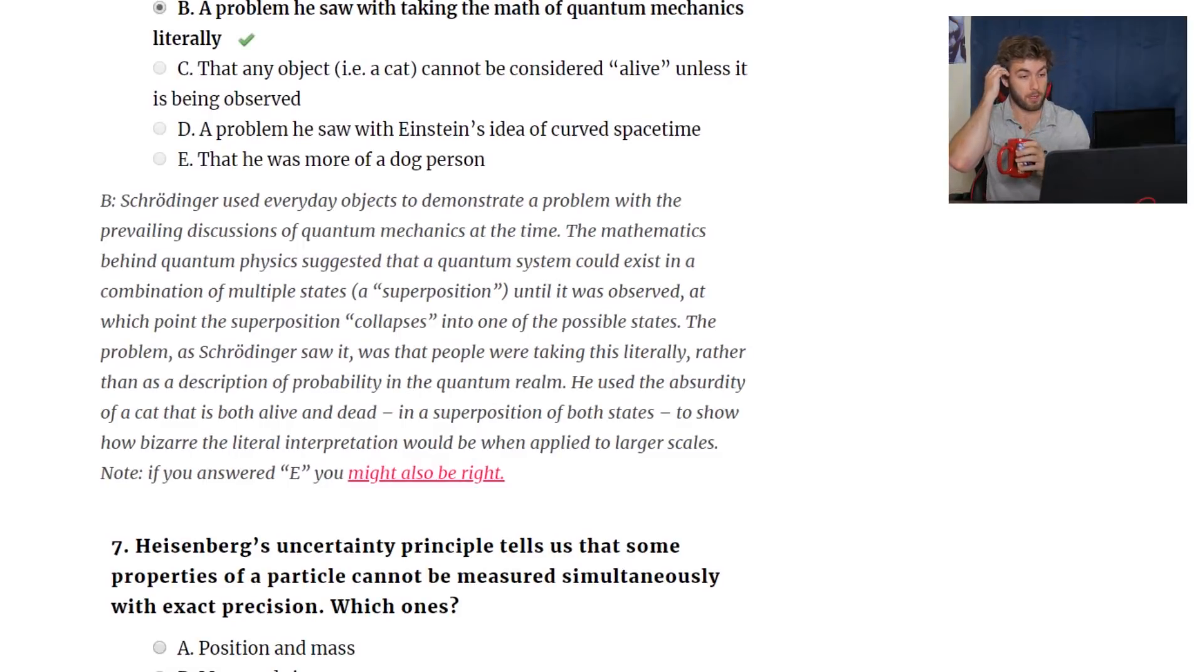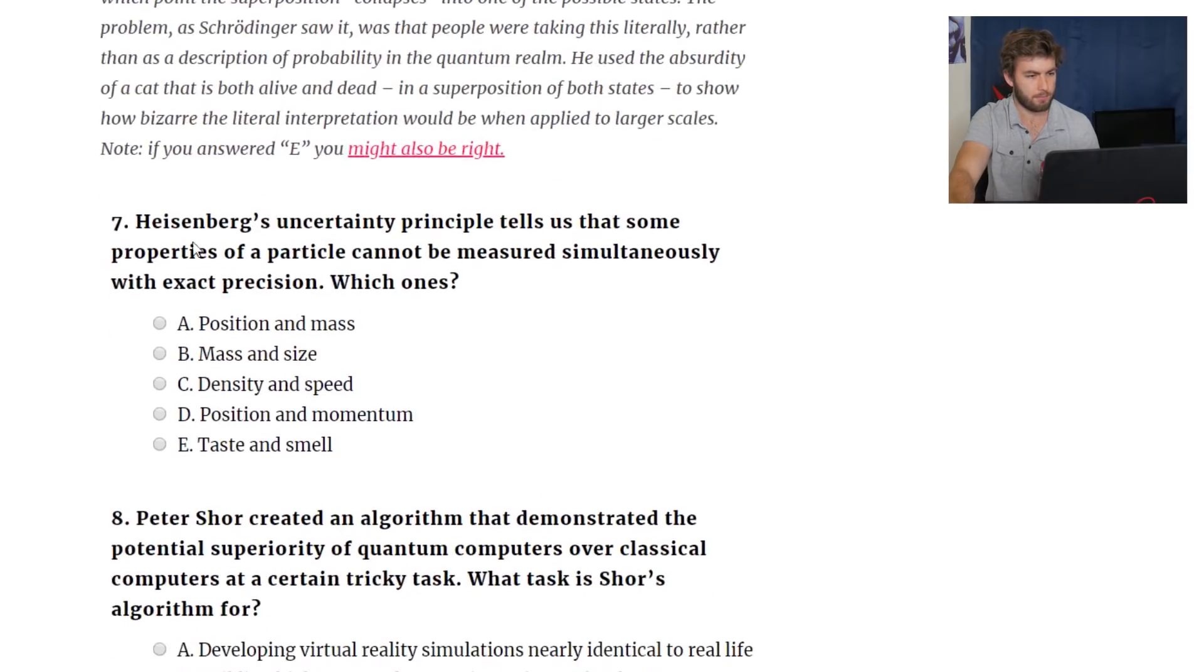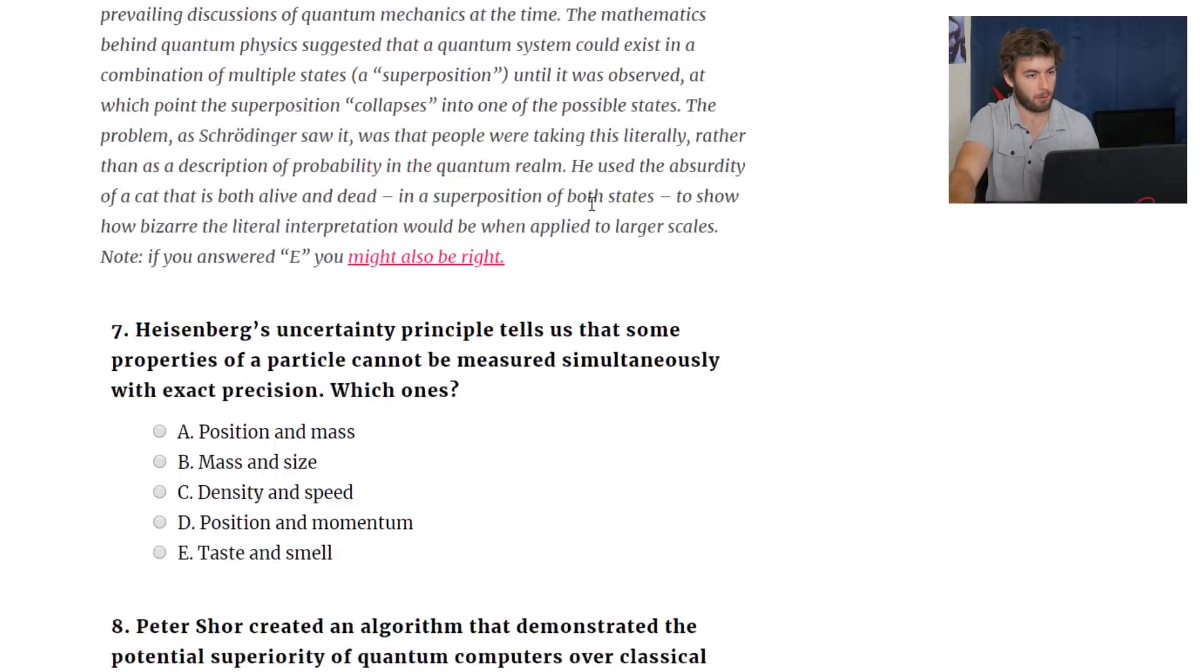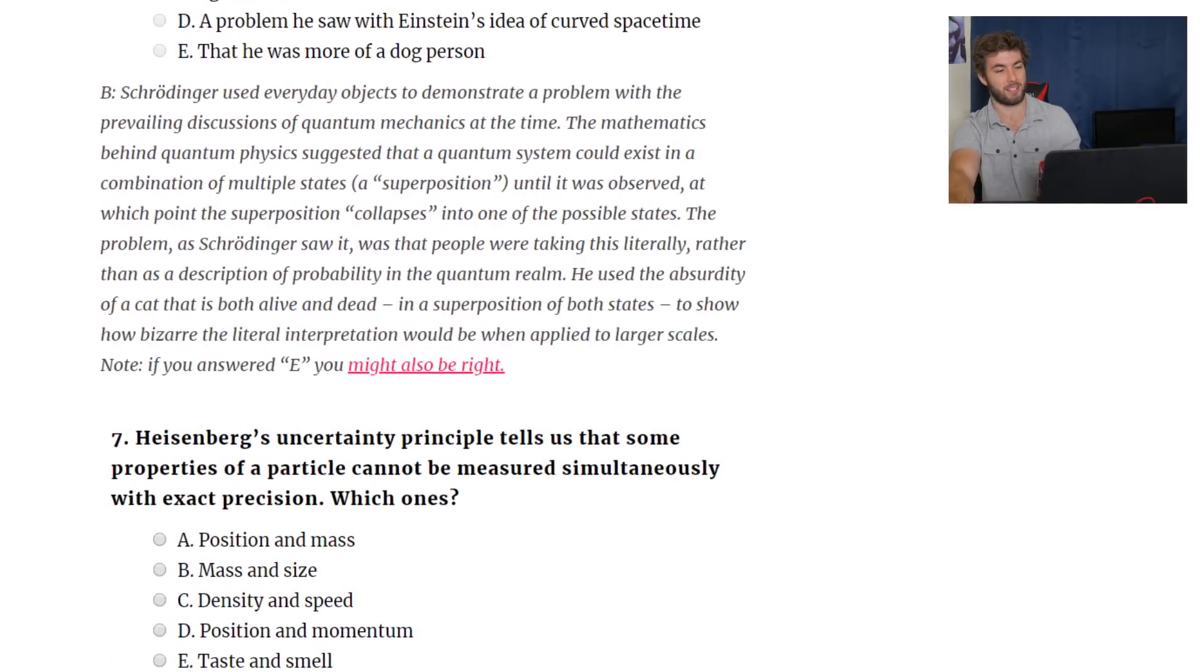Here we go. Schrodinger used everyday objects to demonstrate a problem with prevailing discussions of quantum mechanics at the time. He used the absurdity of a cat that is both alive and a superposition of both states to show how bizarre the literal interpretation would be when applied to larger scales. Note if you answered E, you might also be right. Oh, he was more of a dog person.